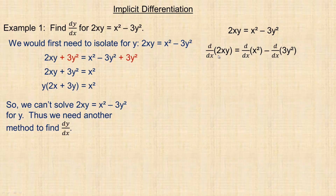On the left here is a product — 2x and y are multiplied together. So we think of 2x as the first function and y as the second. We use product rule: the derivative of 2x is 2, times the second function y — that's the first part. Plus the first function 2x times the derivative of y with respect to x, which is dy/dx.